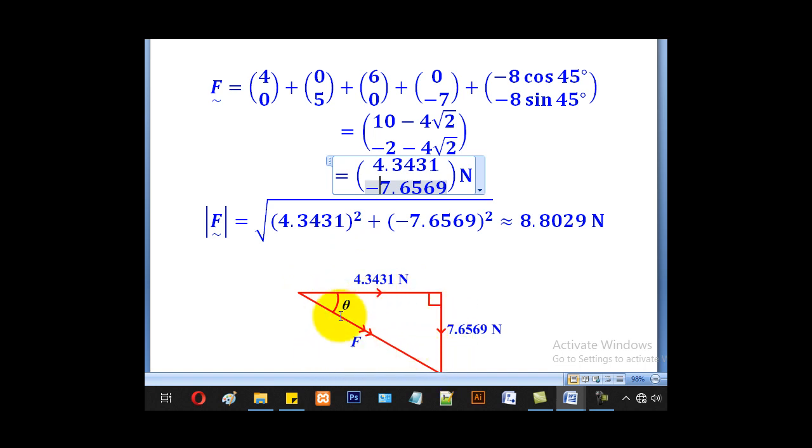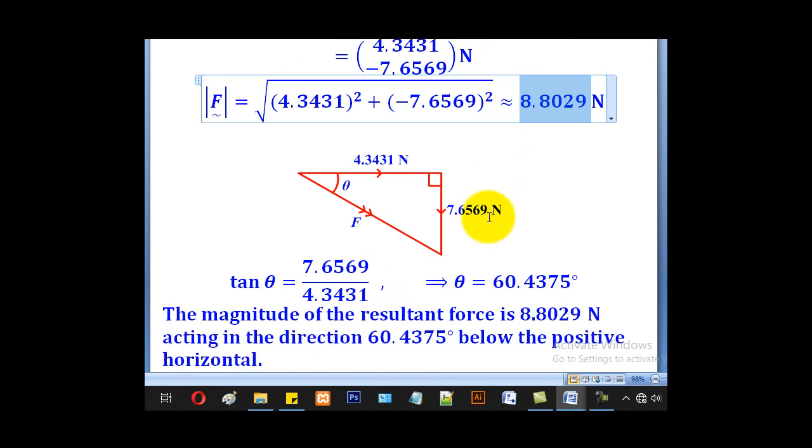To get F, we shall use Pythagoras' theorem. The magnitude of the force will be this squared plus this squared, everything under root, giving us 8.8029 newtons.